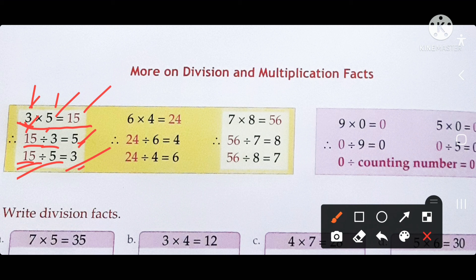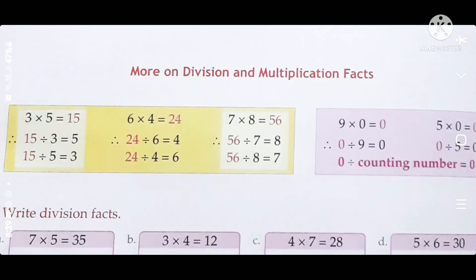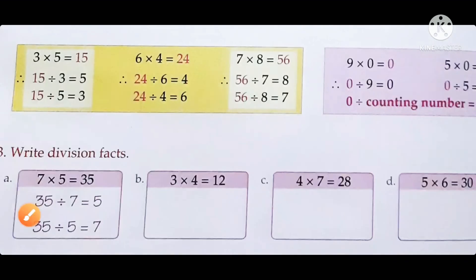When you multiply 0 by any number, the product is 0. And when you divide 0 by any number, the quotient is also 0. So dividing 0 by any counting number always gives quotient 0.